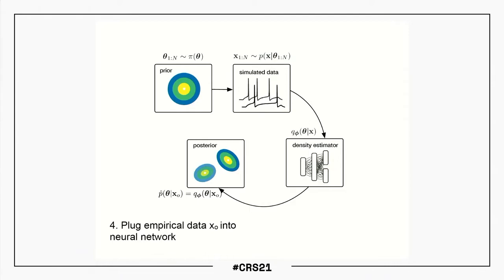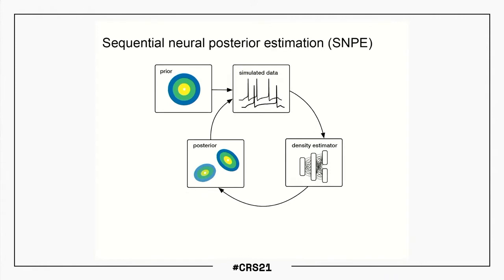This general algorithm will be inefficient because we basically generate lots of random data. But the important thing is that we can close the loop: once the algorithm has started working, it learns what kind of parameters are plausible, and then it becomes more efficient to generate additional simulations from plausible parameters rather than random ones. We call this algorithm sequential neural posterior estimation — we're estimating posteriors, we use neural networks to do it, and we sometimes do it sequentially by adaptively adjusting our simulations.